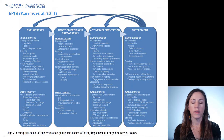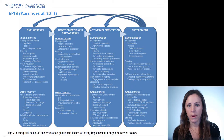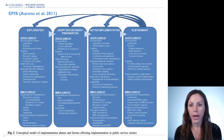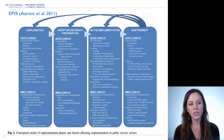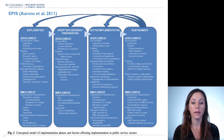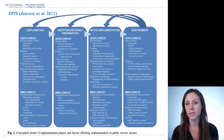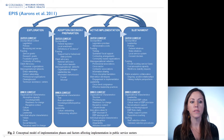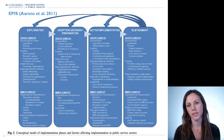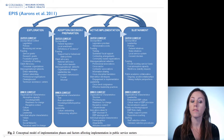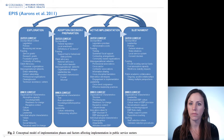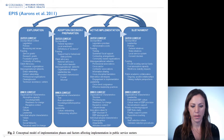Greg Aarons' work with the EPIS model — which stands for Exploration, Preparation, Implementation, and Sustainment — starts to think about outer contextual or policy-level factors and inner contextual or organizational factors that matter for different phases along the implementation continuum, with sustainment being one of them. So the focus here is more on those contextual factors that might matter for sustainability.